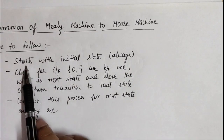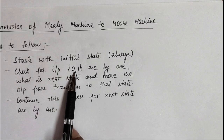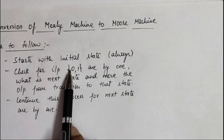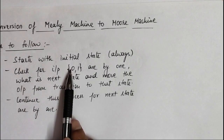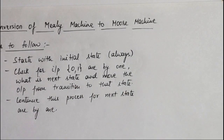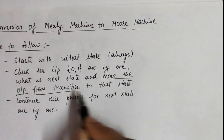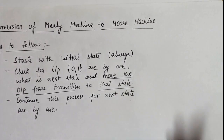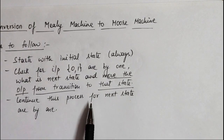What are the steps? The first step is that we always start with the initial state. The second step is that we check for input 0 or 1 one by one — first we consider input 0 and then input 1, or A or B whatever the input may be. Then we check what is the next state with that particular input and move the output from the transition to that state. In the previous conversion from Moore to Mealy, we moved the output from the state to the transition. Now in this conversion we move the output from the transition to the state, because in the Moore machine the output is associated with the state.